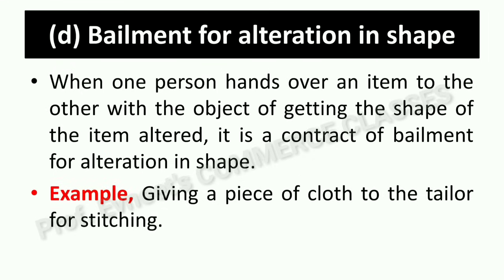Next is bailment for alteration in shape. Alteration means to change. When one person hands over an item to another with the object of getting the shape of the item altered, it is a contract of bailment for alteration in shape. For example, you give cloth to a tailor and the tailor stitches it and returns it to you in the form of a suit — the tailor alters and returns it. This is bailment for alteration in shape.